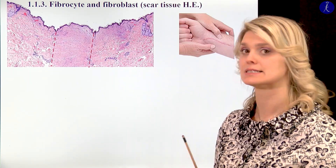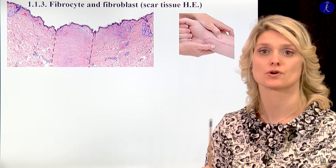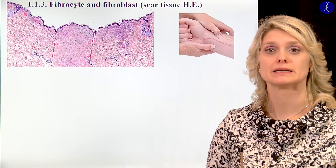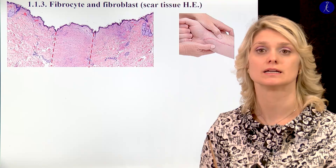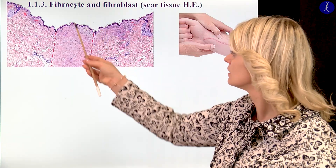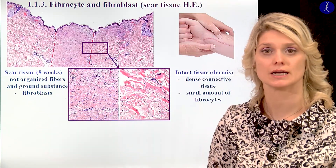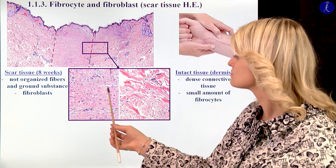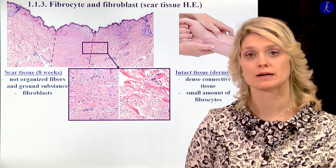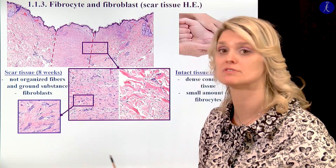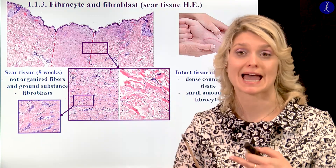Where do we see fibroblasts within the adult tissues? If we have an injury on the surface of the skin, the fibrocytes will be activated and the fibroblasts will start to produce fibers, and the healing of the skin is started. Eight weeks after the injury, we can see a scar tissue in the skin. We have a lot of fibers, but these are not organized in shape, and we have a lot of fibroblasts within the collagen fibers — fibroblasts with big basophilic cytoplasm because of the abundant rough endoplasmic reticulum and ribosomes, because of the active protein synthesis.